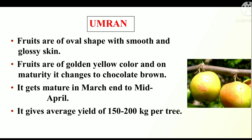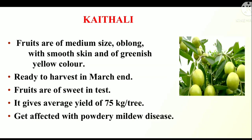Umran variety of Ber. Fruits are of well-shaped with smooth and glossy skin. Fruits are of golden yellow color and on maturity it changes to chocolate brown. It can mature in March to mid-April. Its average yield is 150 kg to 200 kg per tree. Now, Cathali. Fruits are of medium size, oblong with smooth skin and of greenish yellow color. Ready to harvest in March and fruits are sweet in taste. It gives an average yield of 75 kg per tree.